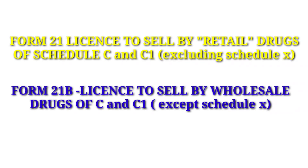Coming to the next Form Number 21. This form is used to issue a license to sell by retail drugs of Schedule C and C1, excluding Schedule X drugs. The next form is Form Number 21B. This form is used to issue a license to sell drugs by wholesale of Schedule C and C1, except Schedule X drugs.